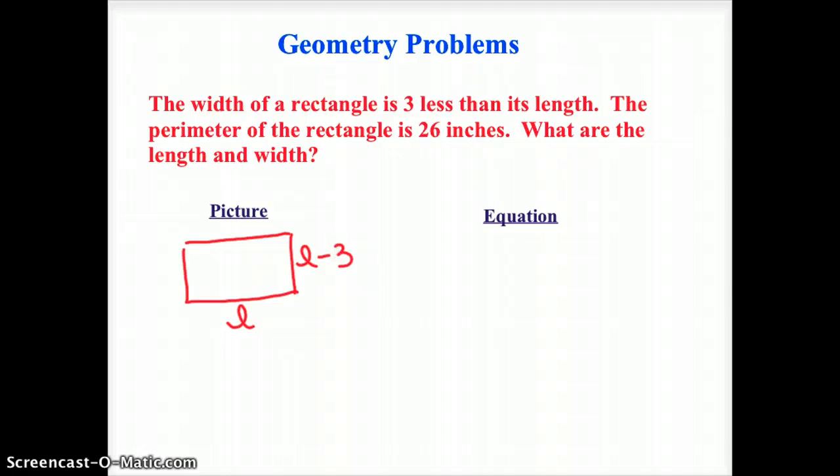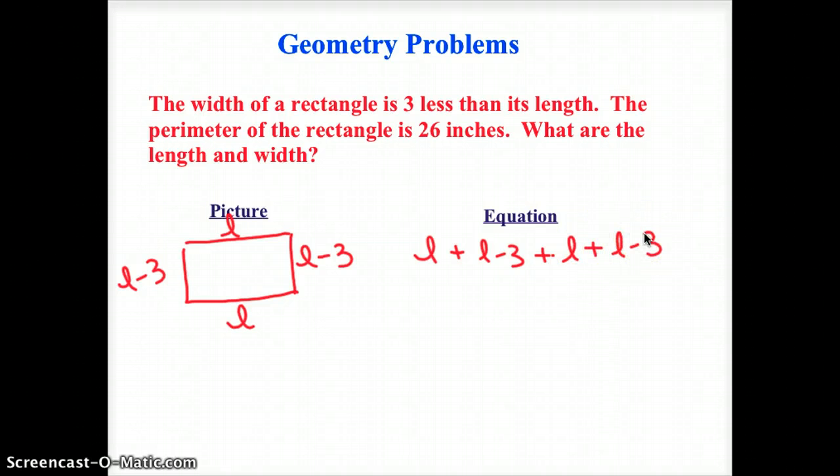And I know that the perimeter is 26 inches. So remember to find perimeter, we're going to add up all the sides. So you might just want to draw, put another L in here and another L minus three. So my equation, I'm going to say that L plus L minus three plus L plus L minus three. You could be smart and do like two times L plus two times the quantity L minus three if you want. That has to equal 26.